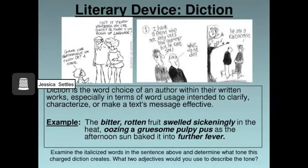Diction is all about word choice. In the example below, the author decided to use certain words that impact the tone and feeling of the writing. Using words like bitter, rotten, and sickeningly enhance the writing.